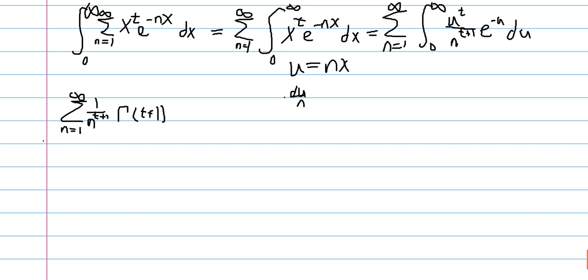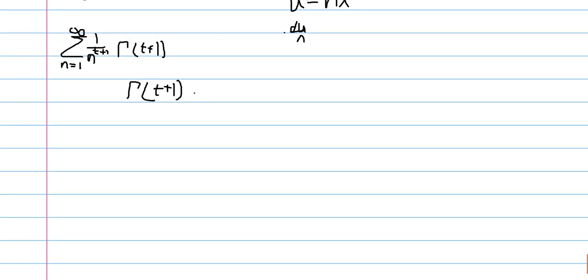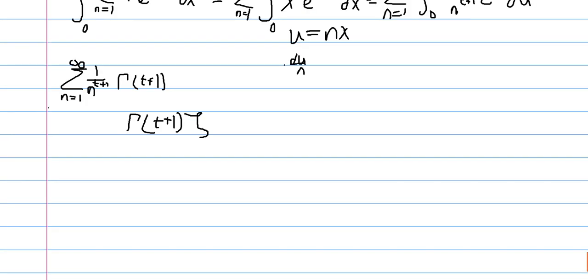Which is a constant in terms of n. And so we can factor out gamma of t plus 1 out of the sum. And the sum itself is a special function. This is the Riemann zeta function, which is the sum of the reciprocal of positive integers to some power. And specifically that power is the input of the zeta function.